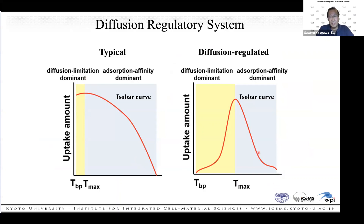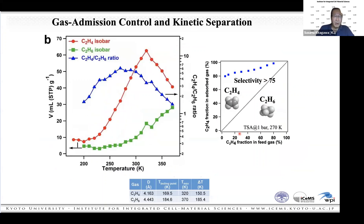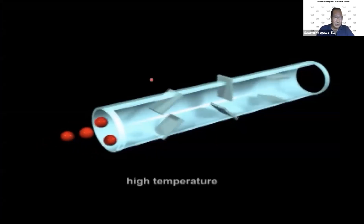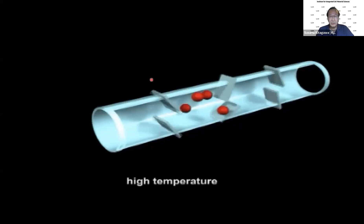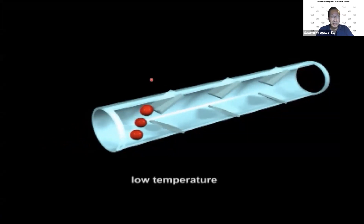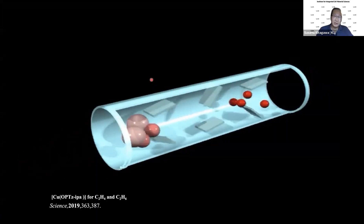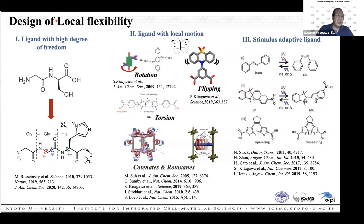For O2 and argon, O2 shows a peak at one temperature while argon shows a different point, giving a selectivity of 350 under those conditions. For styrene and ethylbenzene, there are also different peaks. At high temperature, gas molecules diffuse easily; at low temperature, diffusion is restricted. In the real system, introducing a mixture depending on the temperature gives different diffusion rates. Design of local flexibility is very important.